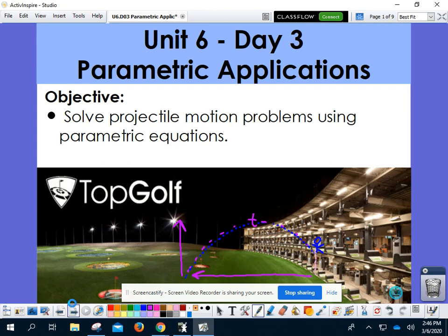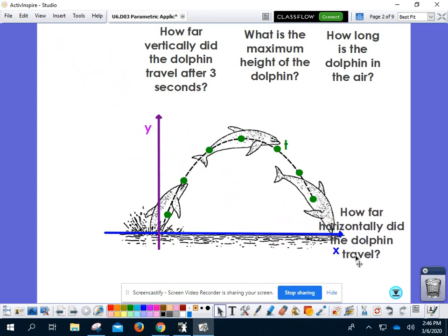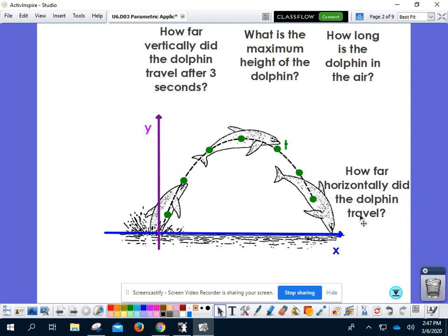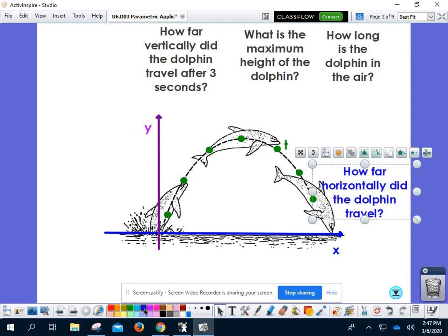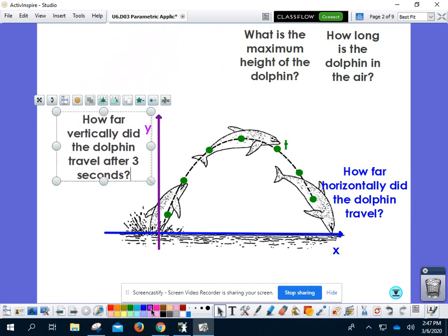So here's what the equation looks like for our dolphin example that we've seen before as well. So these questions are all related to the three different variables that we see. When you're asked something how far horizontally does it travel, that's referring to our x variable, the horizontal distance. When you are asked how far vertically does it travel after three seconds, that's going to be relating to our y variable, the height.